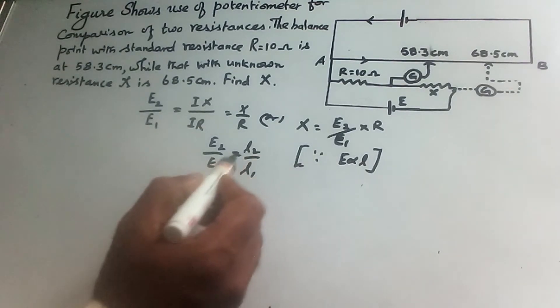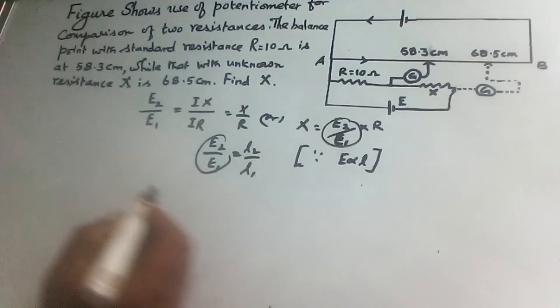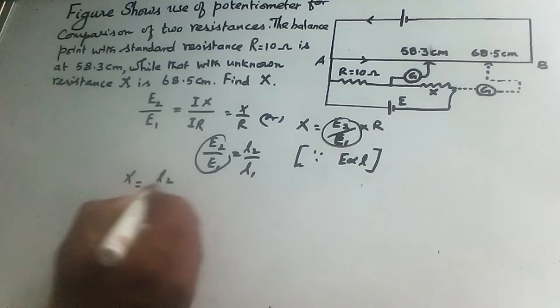Then if we substitute instead of e2 by e1 we can substitute l2 by l1, then x equal to l2 by l1 into r.